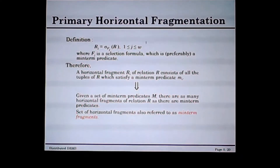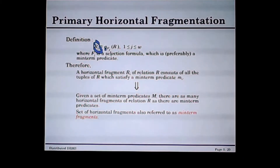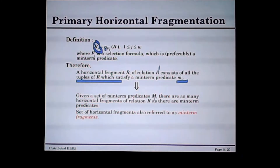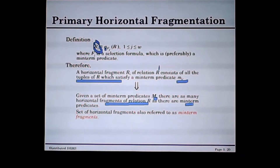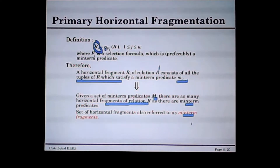Now I go to the definition of primary horizontal fragmentation. Here, Rj is a PHF — primary horizontal fragmentation — and this is the result of a selection with a selection formula or condition fj on relation R. A horizontal fragment Ri of relation R consists of all tuples satisfying minterm predicate mi as the condition for selection. The minterm fragment and minterm predicate can be used interchangeably.